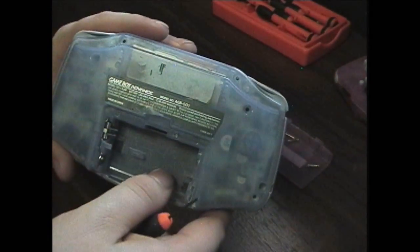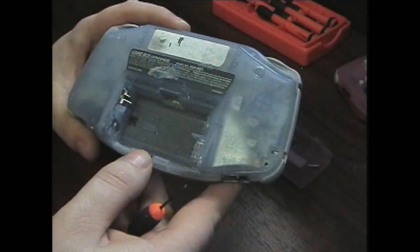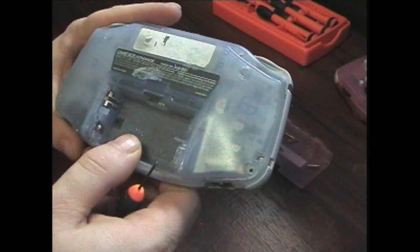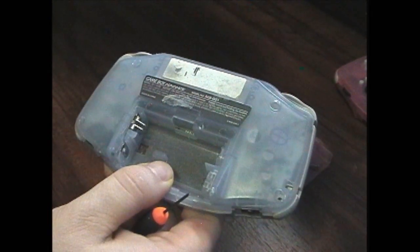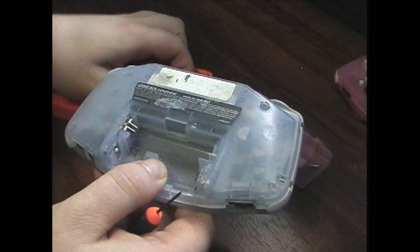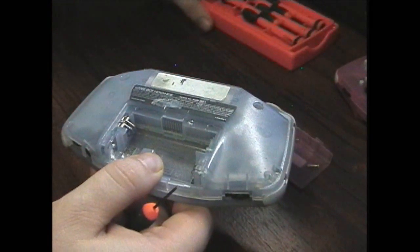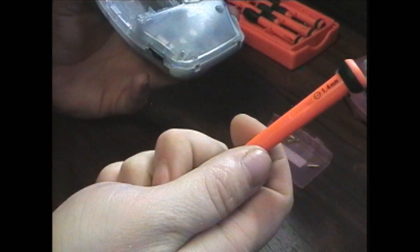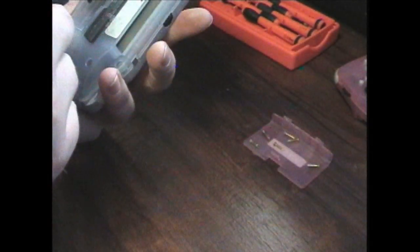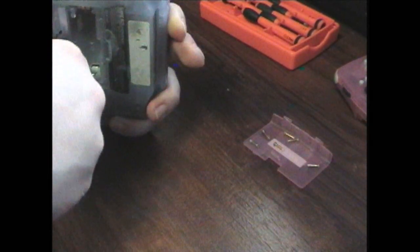I got all the screws out except for one. You might be wondering where is that one? Well, it's right there under my thumb, inside the battery compartment. You can use like a little Phillips, maybe a number zero, but I'm just gonna continue to use the 1.4 millimeter because that will work just fine.